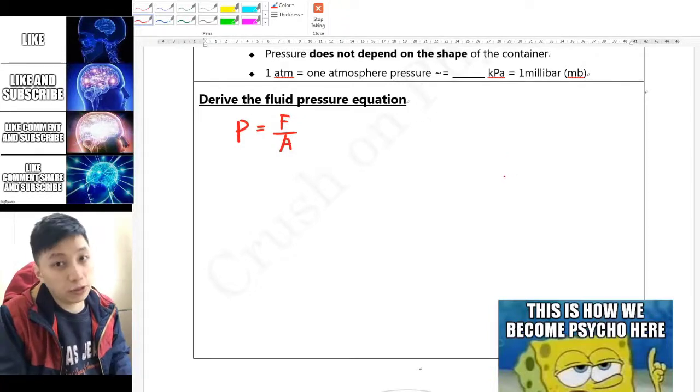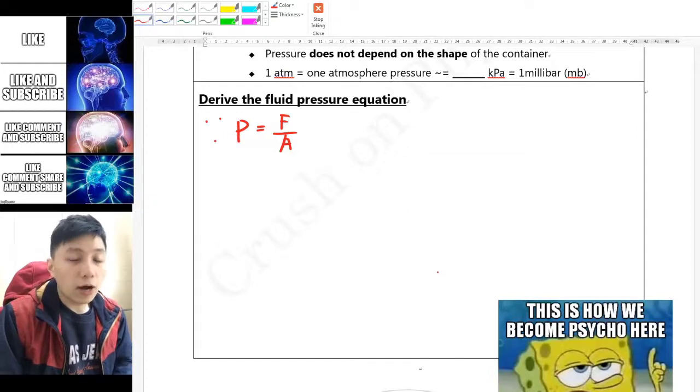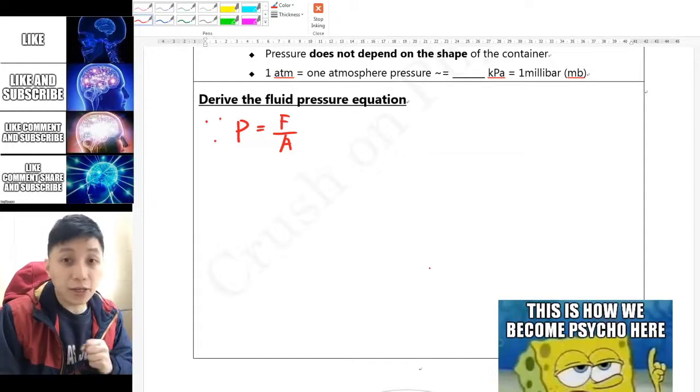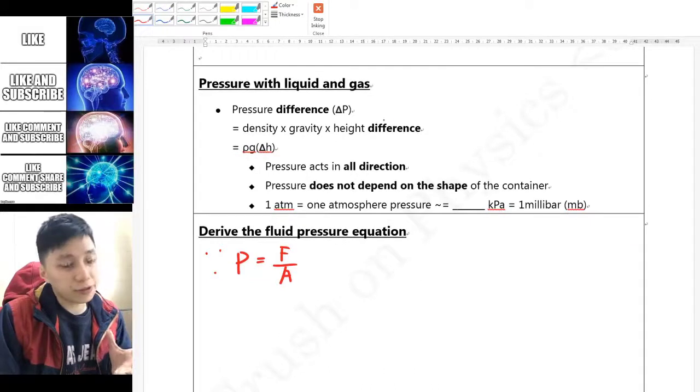So here the definition that we are relying on is actually P equals F over A. Yes, this is a pressure equation that we learned earlier for solids. For now I would like you to start with this definition and try to derive the equation of pressure difference equal to ρg∆h.